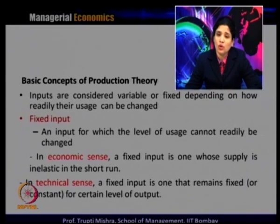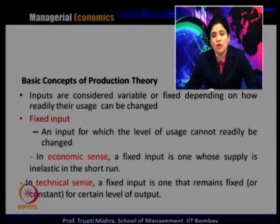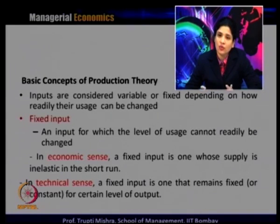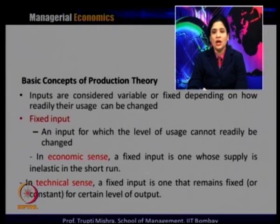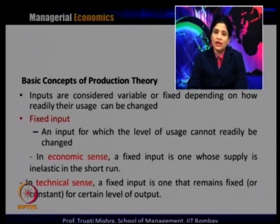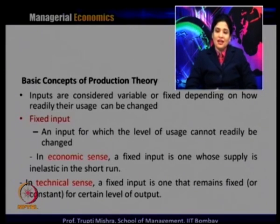For example, to produce 100 units of output, if 10 units of electricity are required, then electricity will be considered as the fixed input because it is not getting changed at that 100 units of output. But if the electricity units change to produce 100 units of output at a different level, that is considered variable input. So in economic sense, fixed input is one whose supply is inelastic in the short run, whereas in technical sense, a fixed input remains constant for a certain level of output.